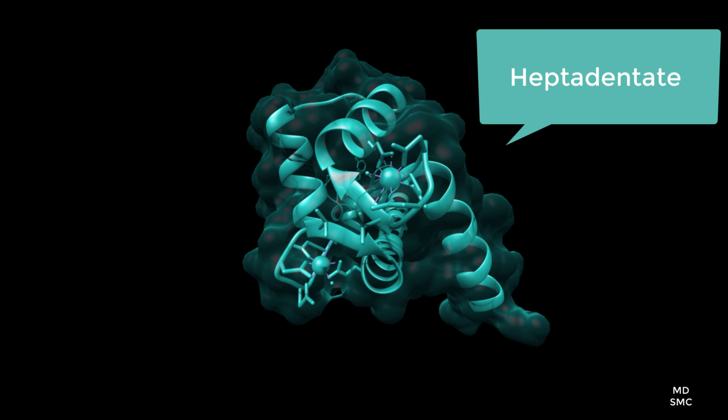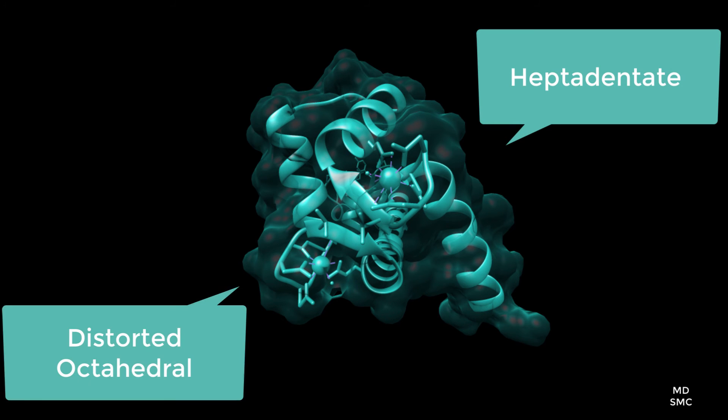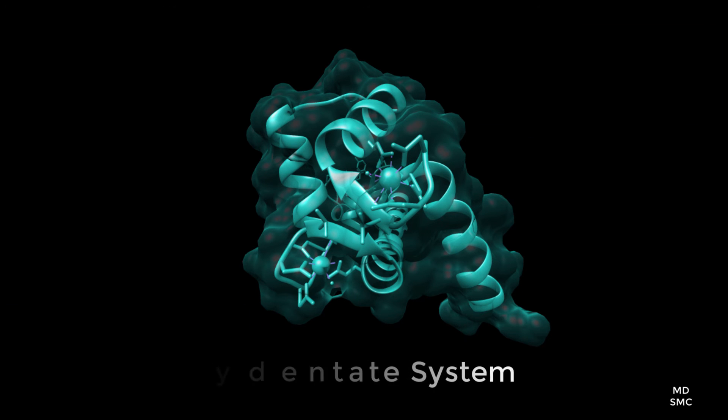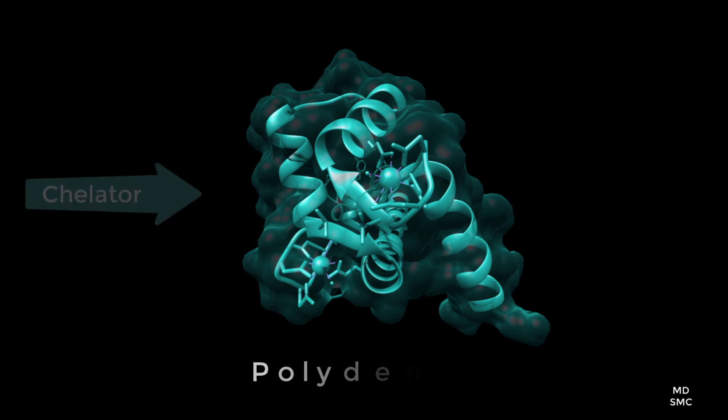The heptadentate system that is formed in a distorted octahedral geometry with the calcium metal surrounded by seven donor atoms is considered a polydentate system. This makes the polypeptide a chelator.